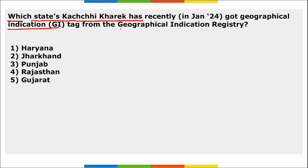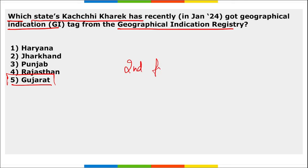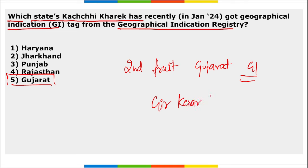Gujarat's Kachhi Kharik — also known as Kachhi Dates or Kachi Khajur — recently received a GI tag from the Geographical Indication Registry. This indigenous date variety from the Kachchh region of Gujarat became the second fruit from Gujarat to receive a GI tag, after Gir Kesar Mango, which received it in 2011.